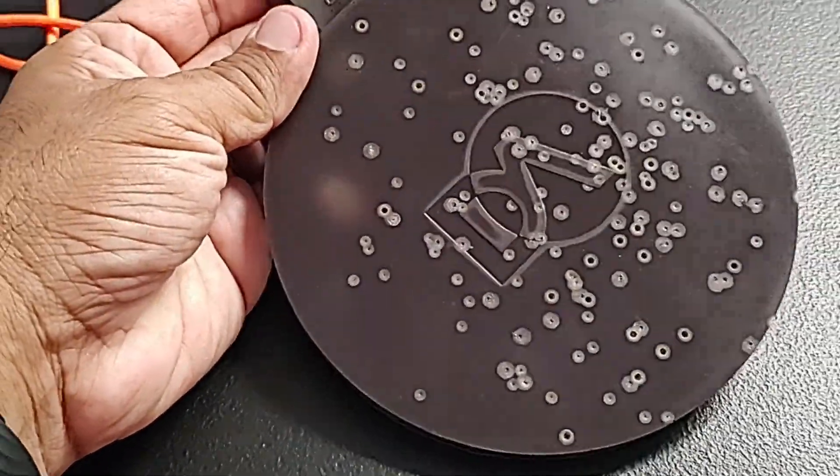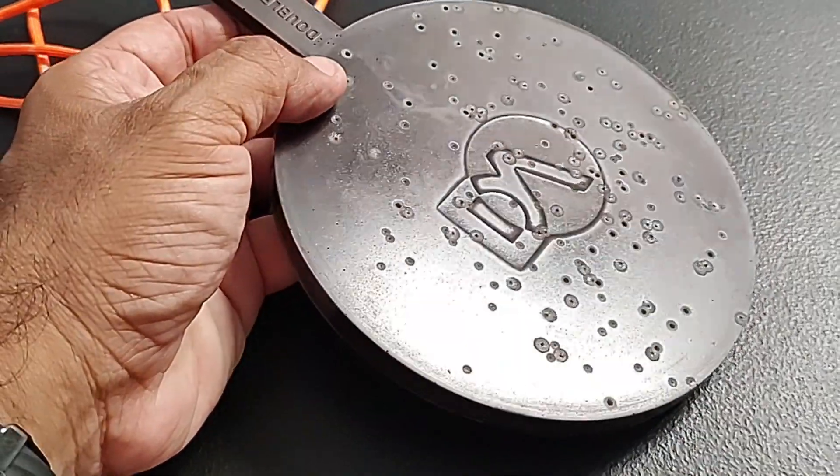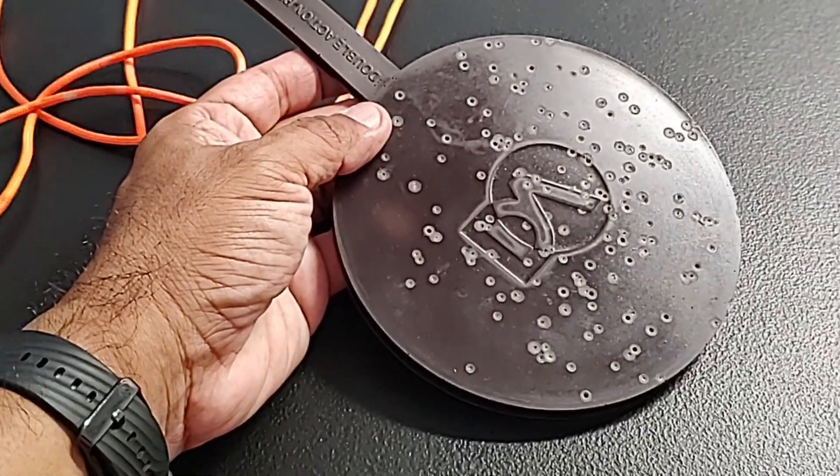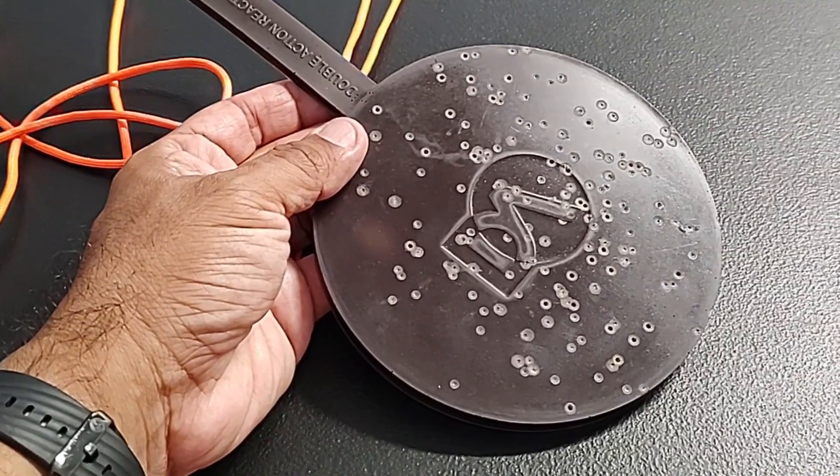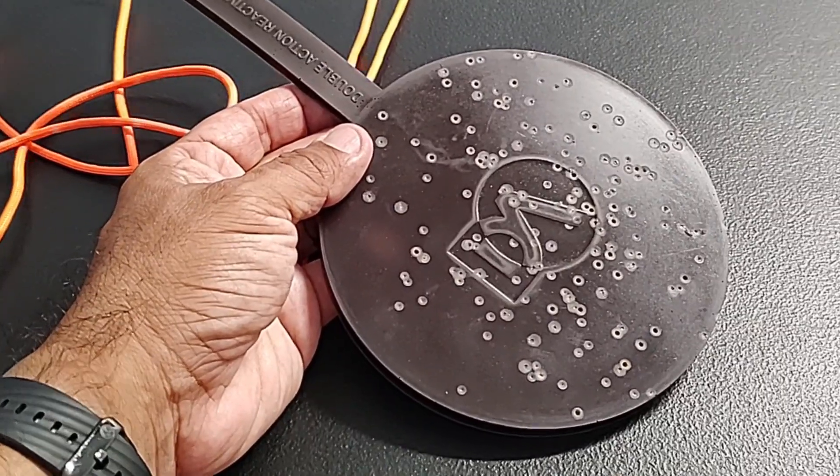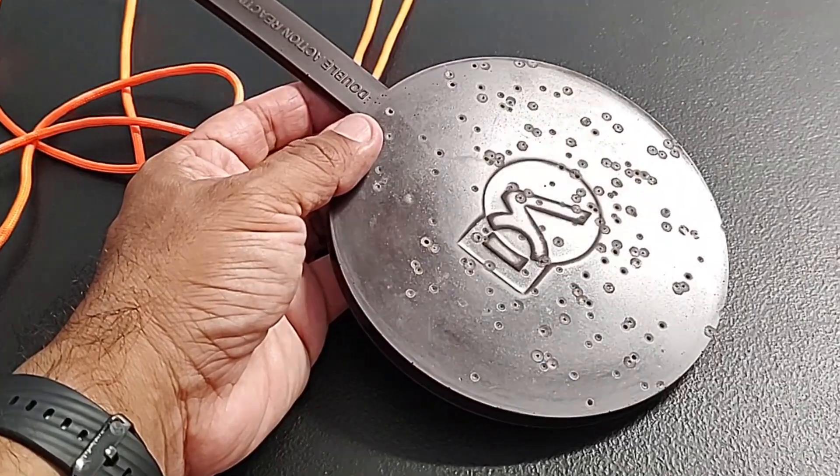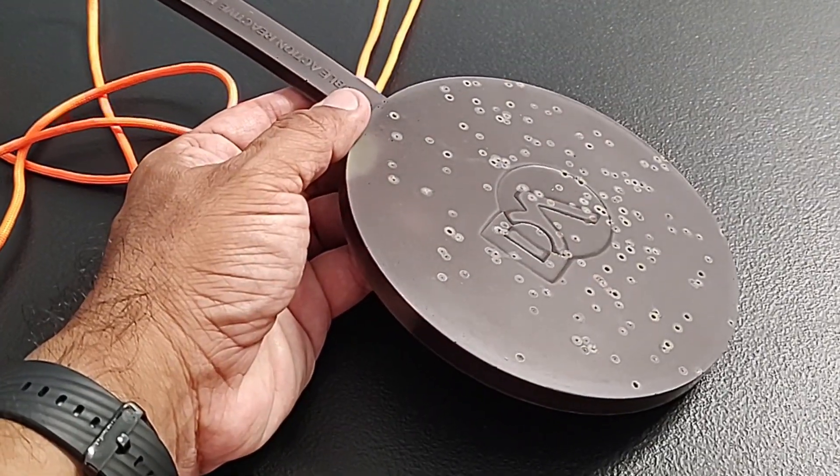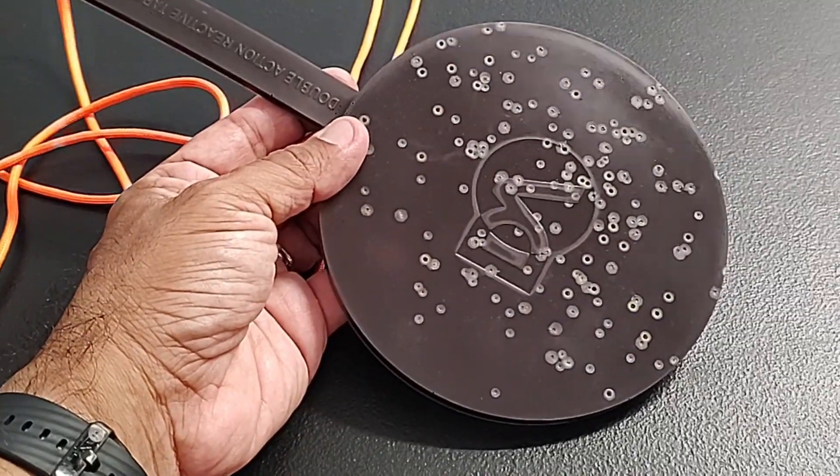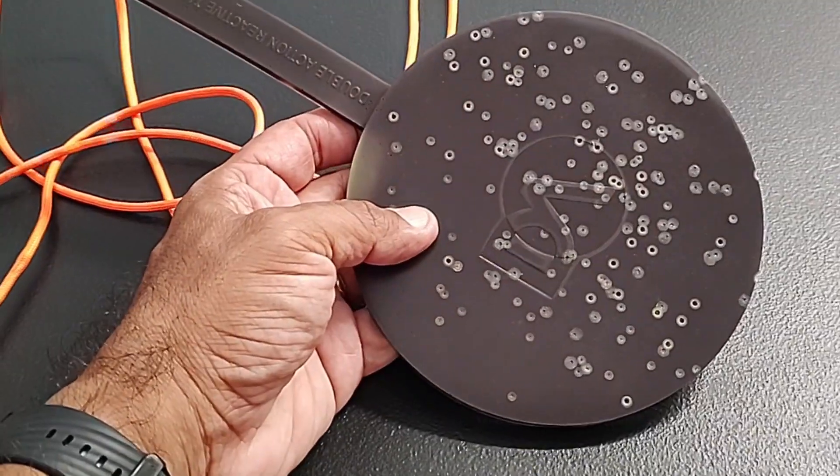Now this thing was 25 bucks plus shipping. I am going to get more than a couple of range days out of it. The paper or sticky targets that you can buy, the color changing reactive ones where you can see where you shot, are I want to say six bucks for a three pack at Walmart, and those are six inch I think, similar to this one. So I think I'm going to get my money's worth out of this.